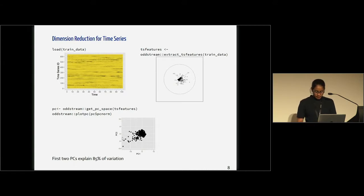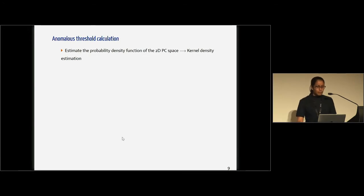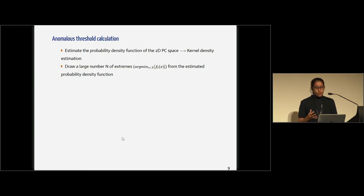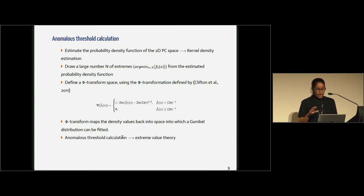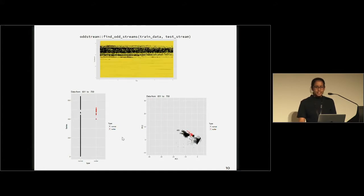Once I obtain this 2D feature space, I estimate the probability density function of this 2D feature space using kernel density estimation. Then we draw a large number of extremes — the most improbable values — from this estimated probability density function. Once we obtain those values, we apply a side transformation that maps the density values back into a space where we can fit a Gumbel distribution. Once we obtain that distribution, we apply extreme value theory and identify an anomalous threshold. Once the anomalous threshold is calculated, the online phase is activated and tests for newly arrived data.